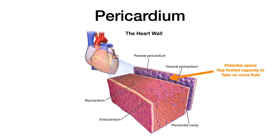Looking at the pericardium, you see the two layers: the parietal pericardium and the visceral pericardium. Because that potential space between them has a very limited capacity to absorb more fluid or more mass effect, that is the reason that with inflammation in this area, you have reduced heart function and clinical symptomatology.